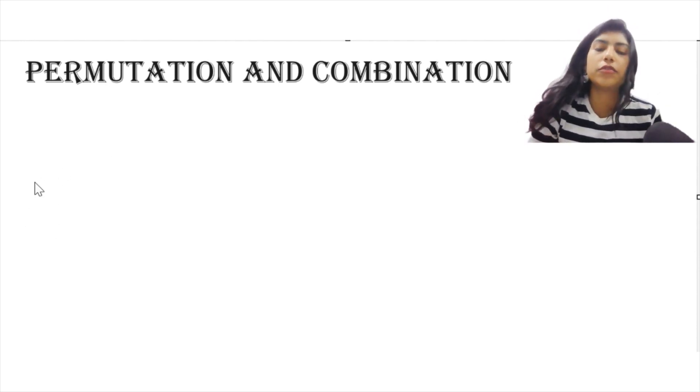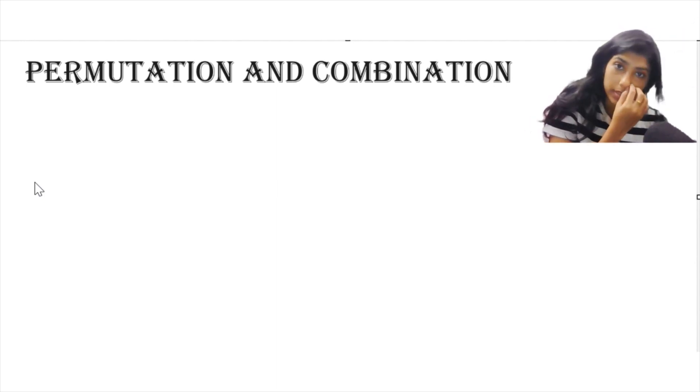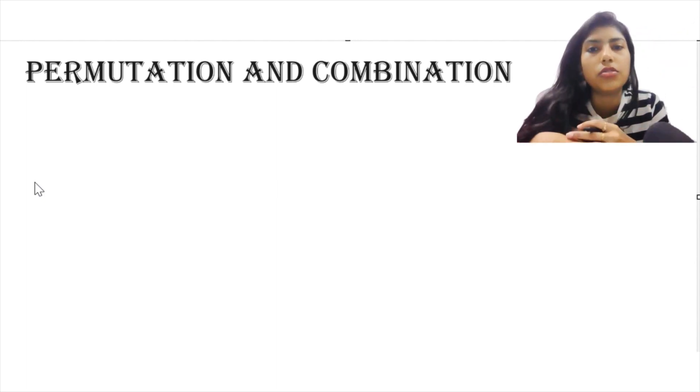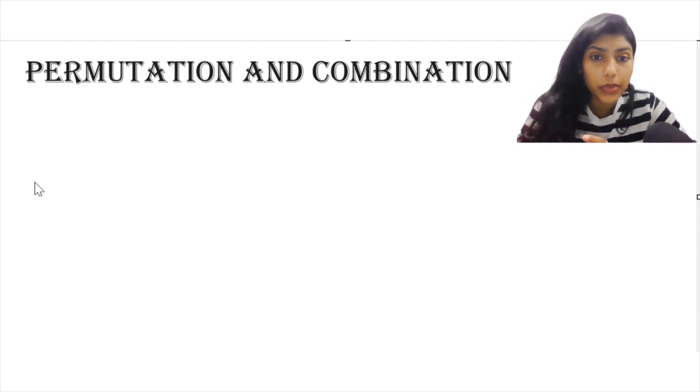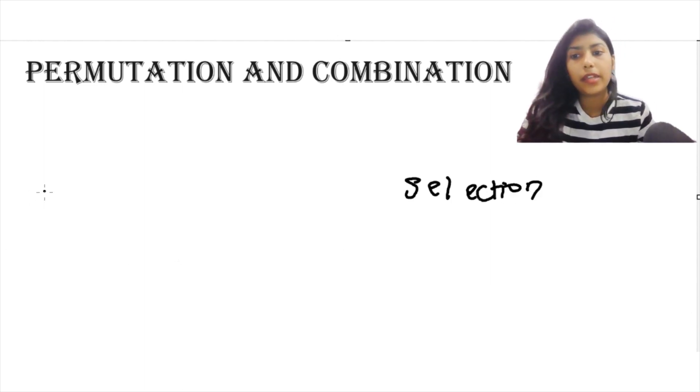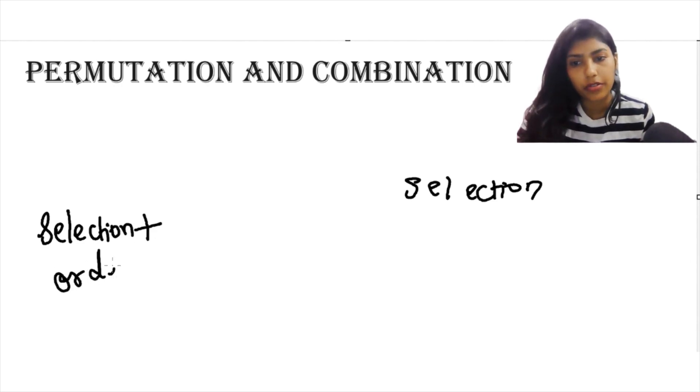First of all, let's start with what permutation and combination means. This is a concept that is used when you are dealing with selection or number of ways in which you can select certain items from a bigger pool of items. That is when you use combination and permutation. And what is the difference between combination and permutation? Basically, all you need to remember is combination deals with only selection while permutation deals with both selection and order of selection.